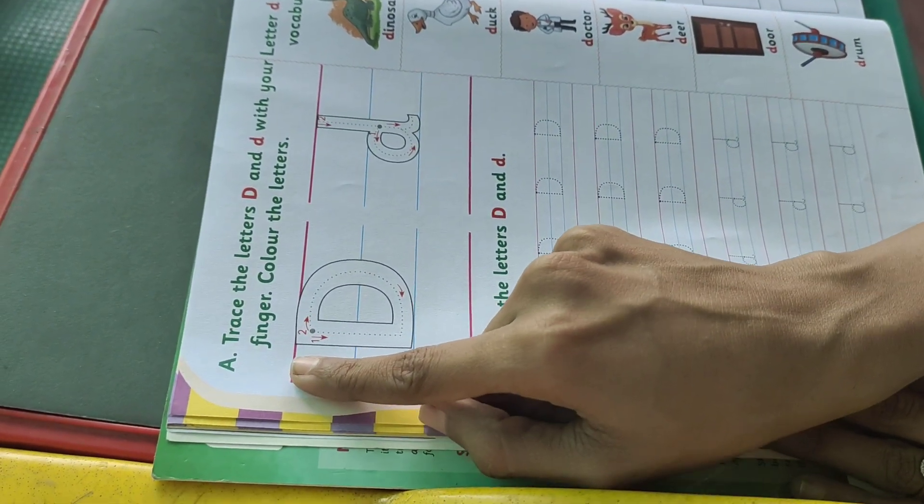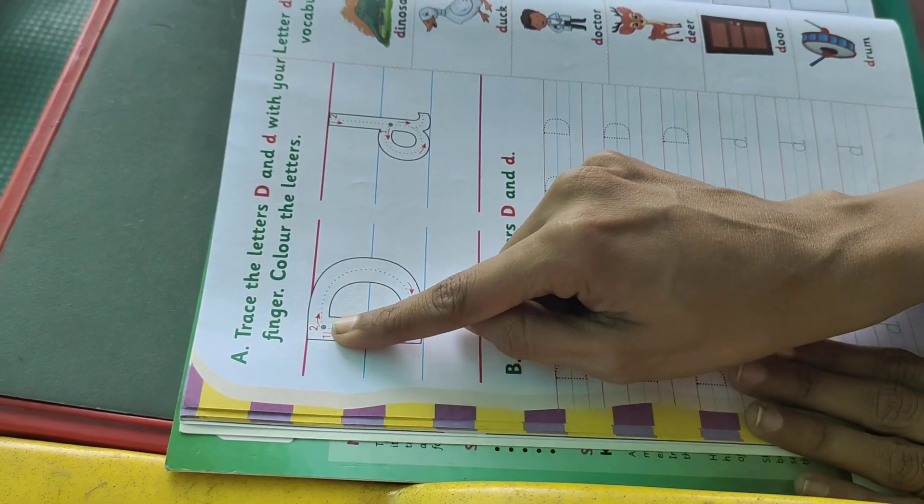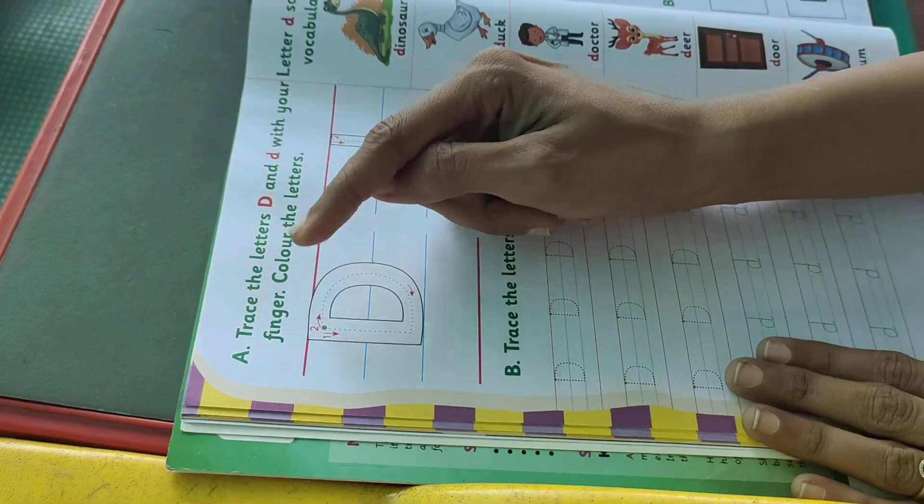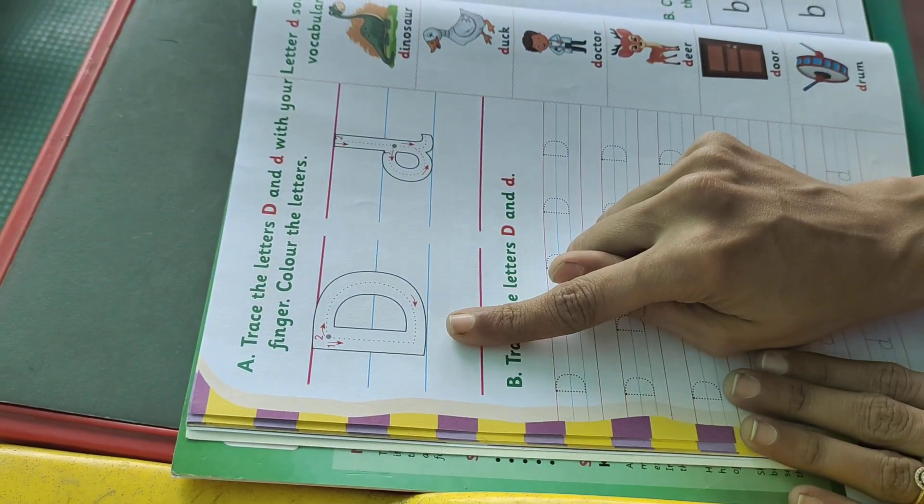you have to start from the red line to second blue line. Make a standing line from red line to second blue line. And from the red line, you make left curve. This is capital D.